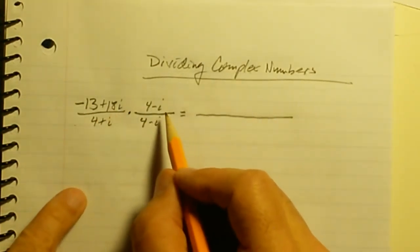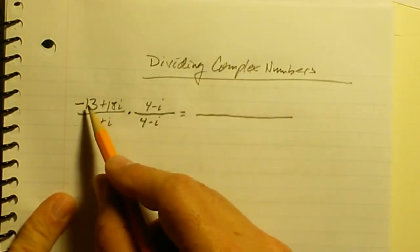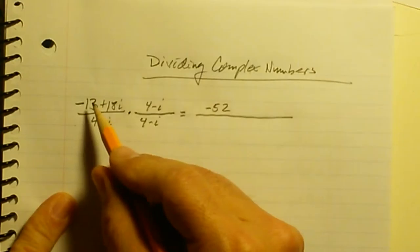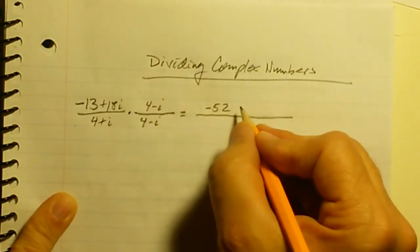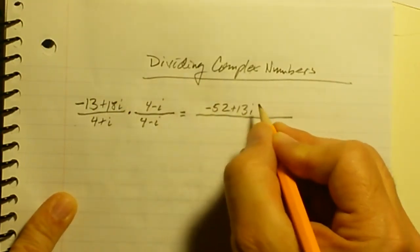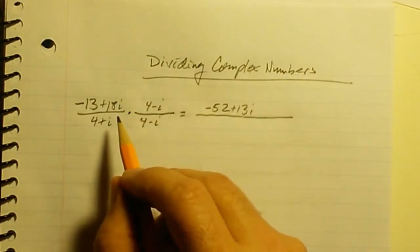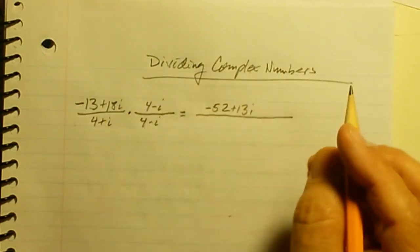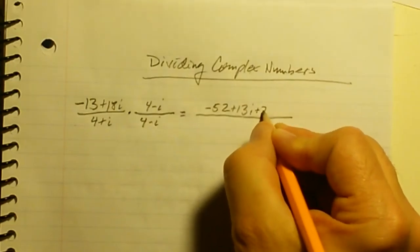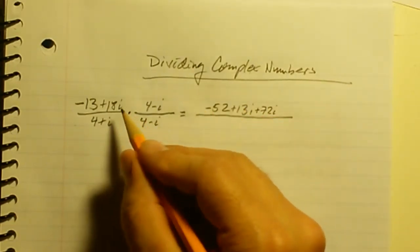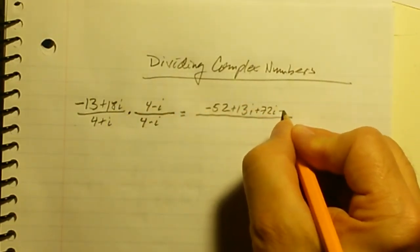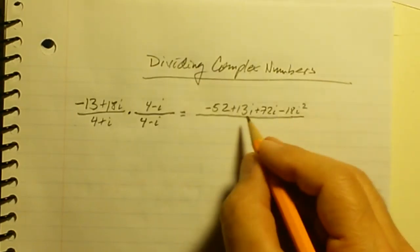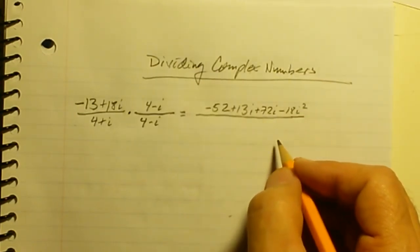In the numerator I'll use the FOIL method: negative 13 times 4 is negative 52, negative 13 times negative i is plus 13i, 18i times 4 gives me 72i, and 18i times negative i is minus 18i squared. That's my numerator.